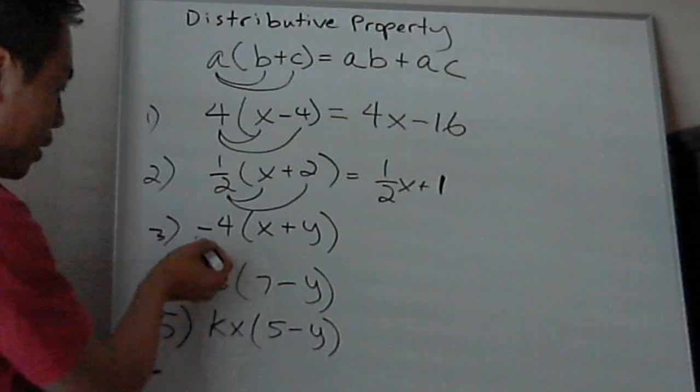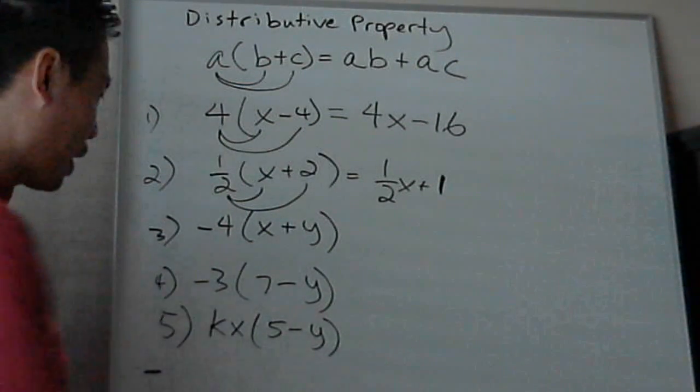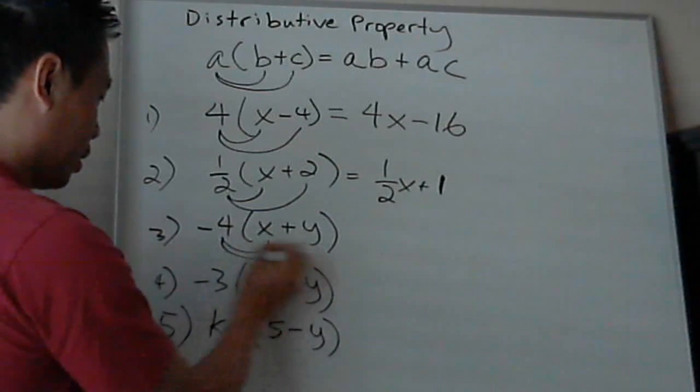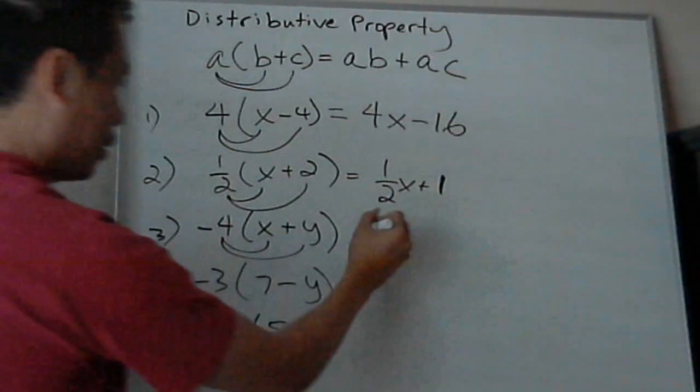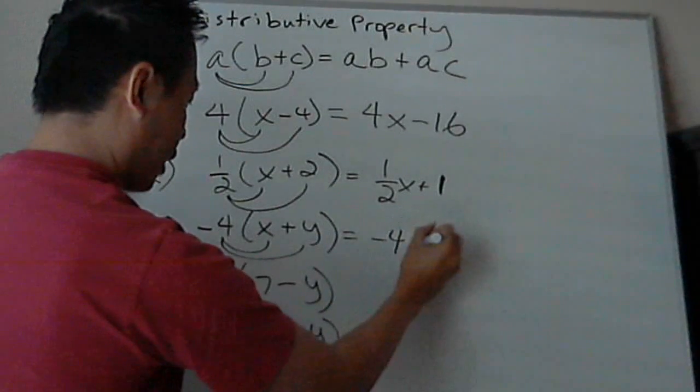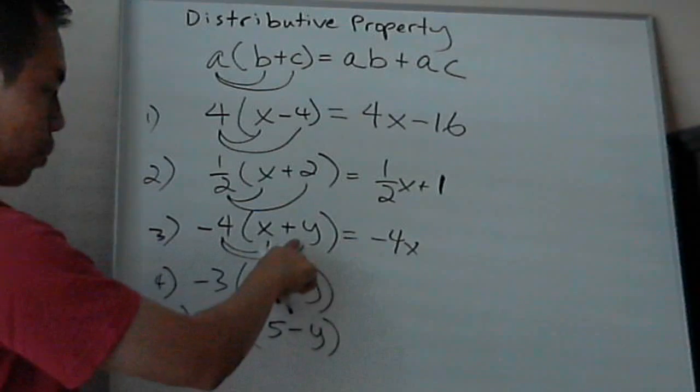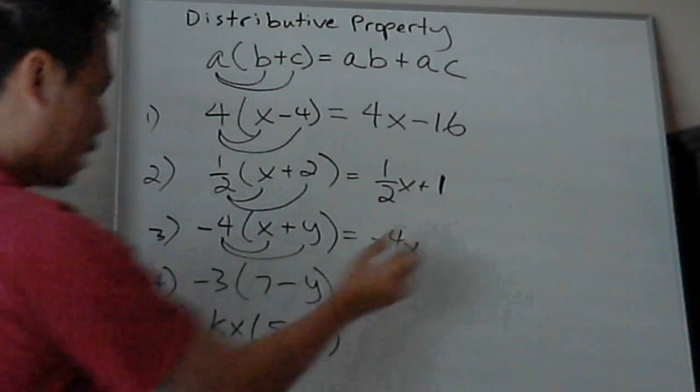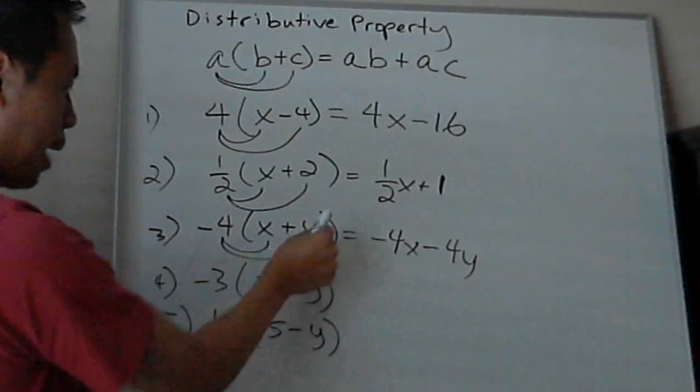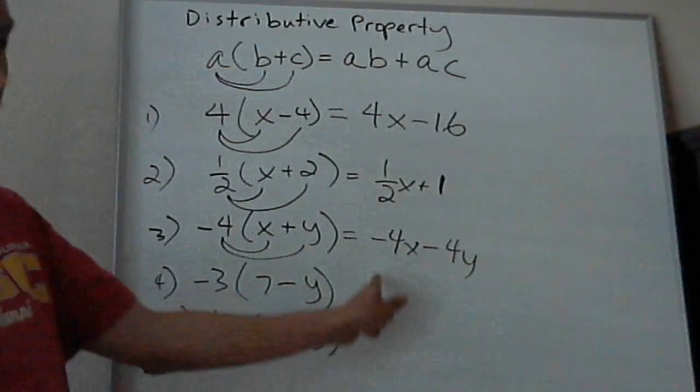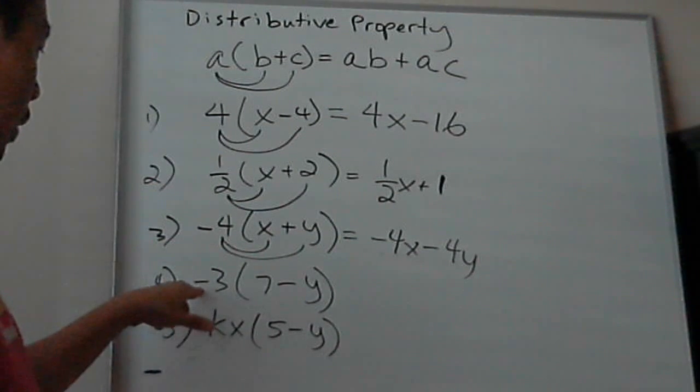Let's go to example 3. You have negative 4 times x plus y. Same thing, nothing different. Negative 4 times x is negative 4x, and negative 4 times positive y is negative 4y. So the answer is negative 4x minus 4y.